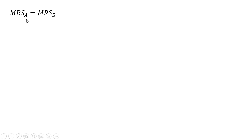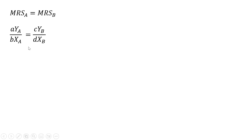In equilibrium, the marginal rate of substitution for consumer A will equal the marginal rate of substitution for consumer B. So making our substitutions for the marginal rates of substitution that we just found, we're going to cross-multiply here.